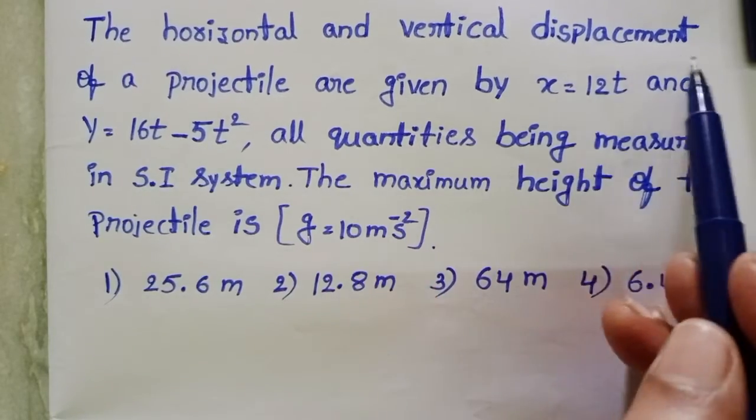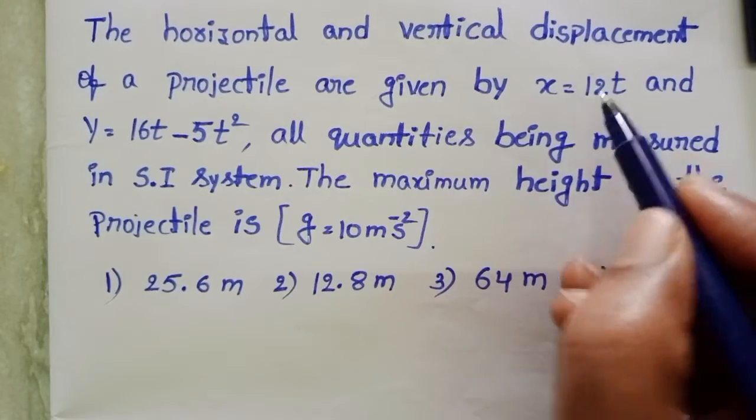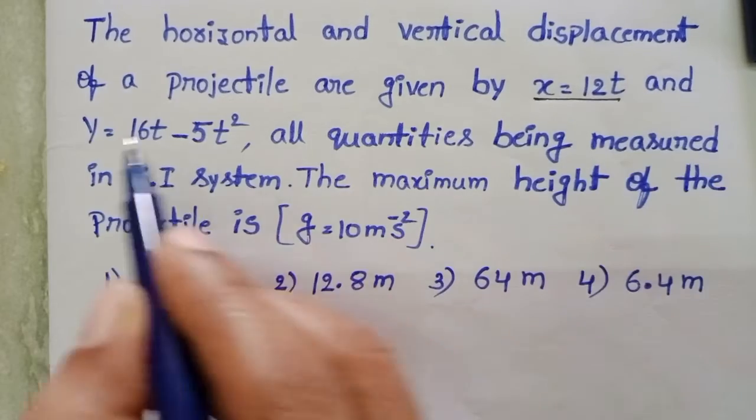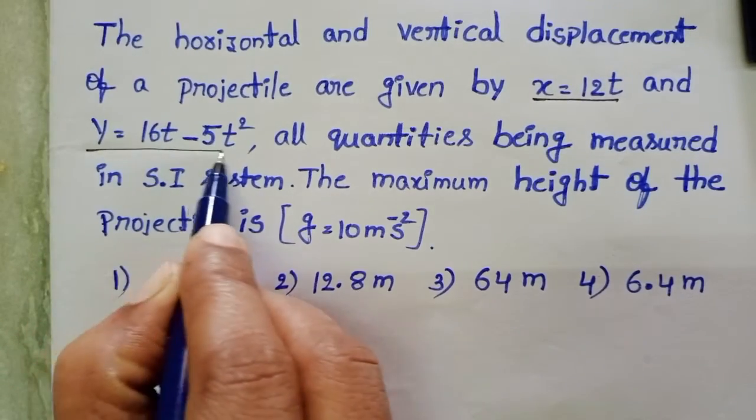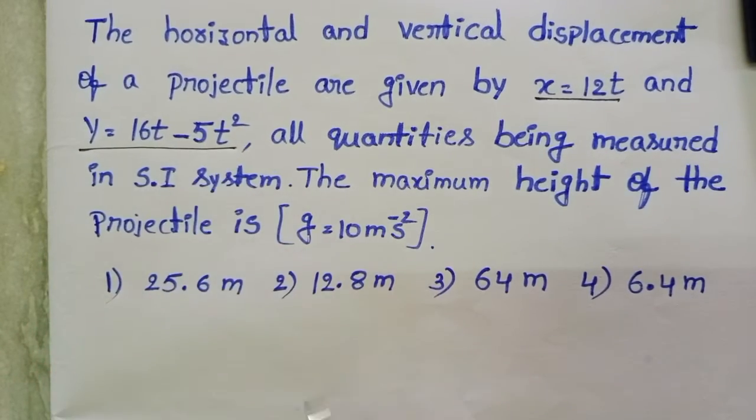The horizontal and vertical displacement of a projectile are given by x equals 12t and y equals 16t minus 5t square.